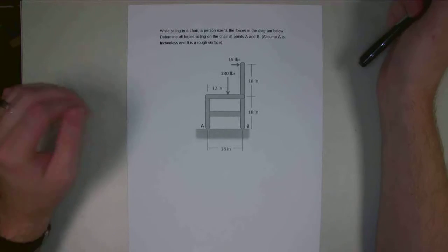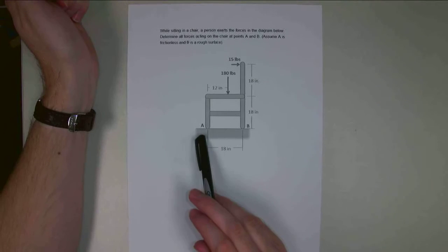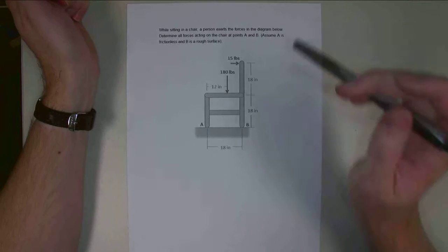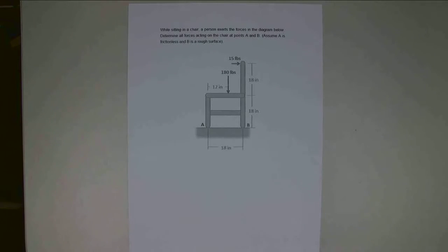Hello. For this problem, we have a chair with someone sitting in it. So this is our chair. We've got front legs at A, back legs at B, and the two forces,